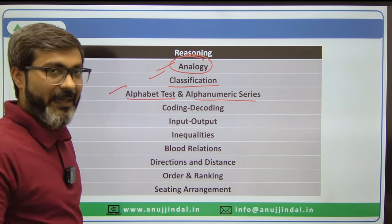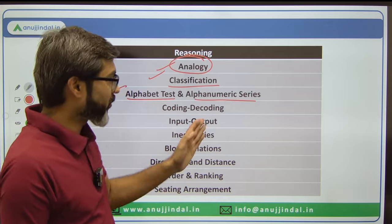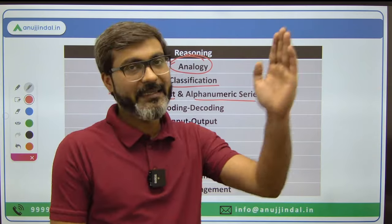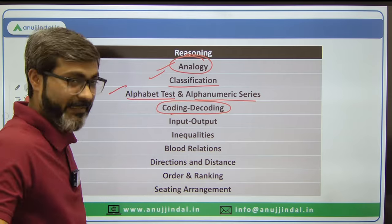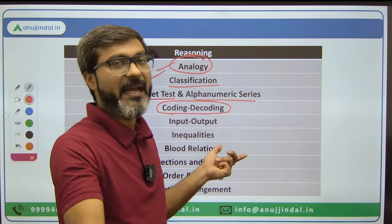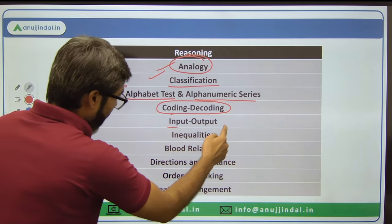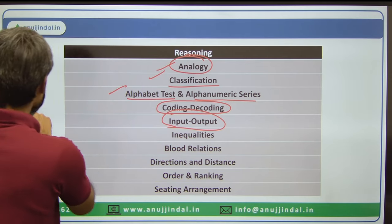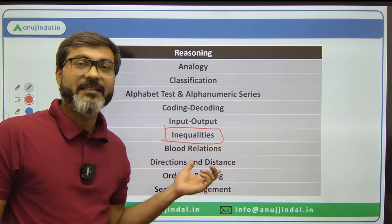Let's decode the Reasoning syllabus. Topics include: Analogy — many questions come from this. Classification. Alphabet Test and Alphanumeric Series. I will be making separate detailed videos for Quant, Reasoning, English, and GA to decode each topic further. Coding-Decoding — many questions come from this, and it is a very vast topic with various types covered in books. Input-Output — again various types exist and you need to cover all types.